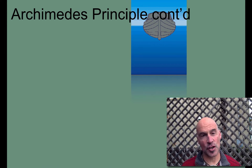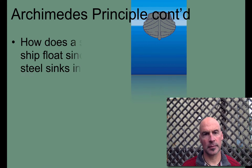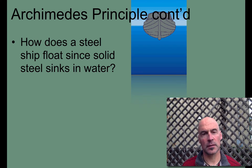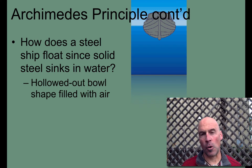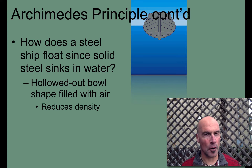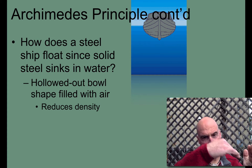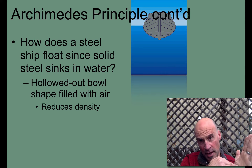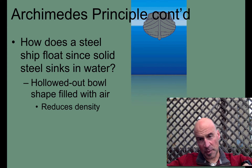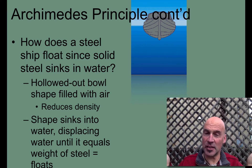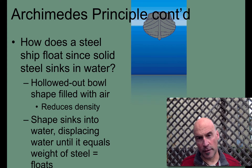Let's keep talking about Archimedes' principle. How does a steel ship float if it's solid steel — why doesn't it just sink? Because it's a hollowed-out bowl and the shape is filled with air. That reduces the overall density of the object because it's spread out, with air pushing against the water. The shape sinks into the water and displaces water until it equals the weight of the steel, and that's why it floats.